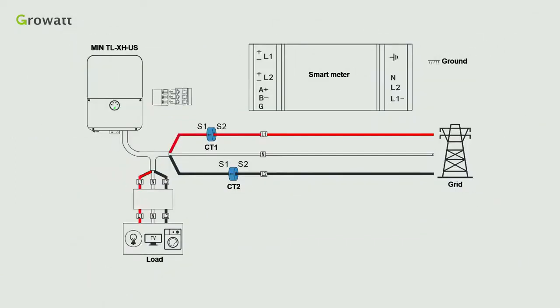First, connect L1 port to L1 line of grid, L2 port to L2 line of grid, N port to N line of grid, and ground port to ground.